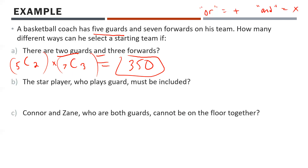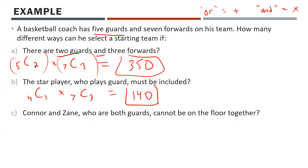Condition B: the star player who plays guard must be included. Since that player is already chosen, we only need one more guard from the remaining four — that's 4C1 — times 7C3 for the forwards. Throwing this in the calculator gives 140 different possibilities.